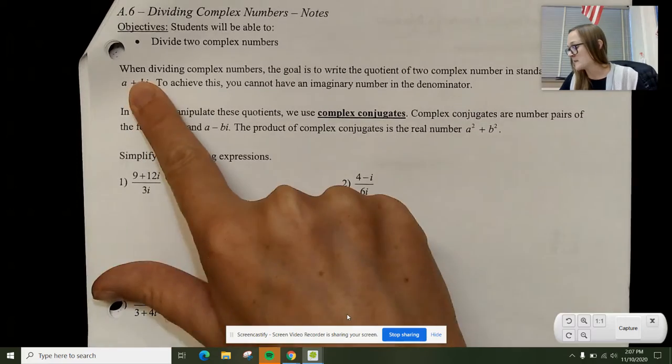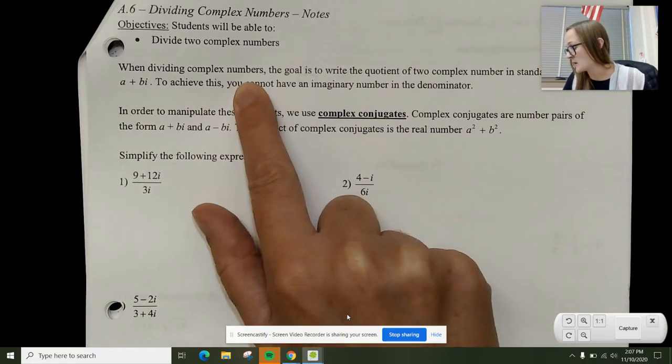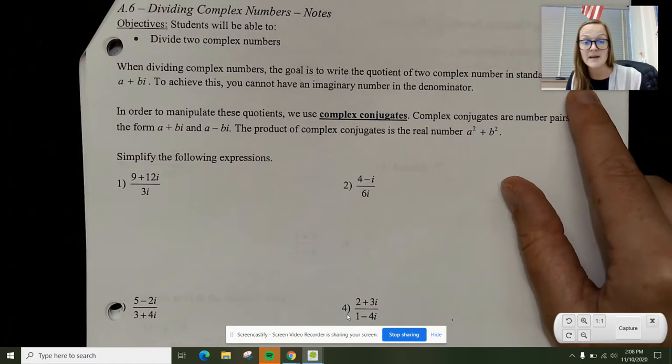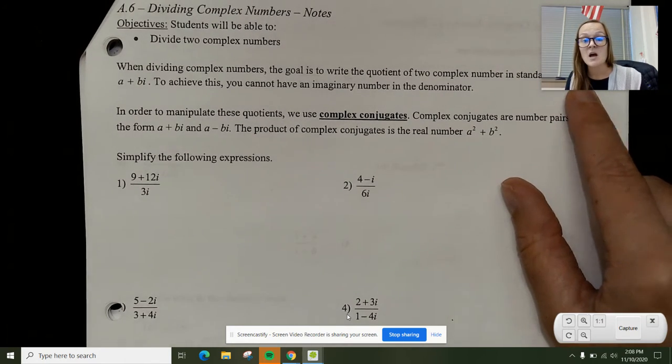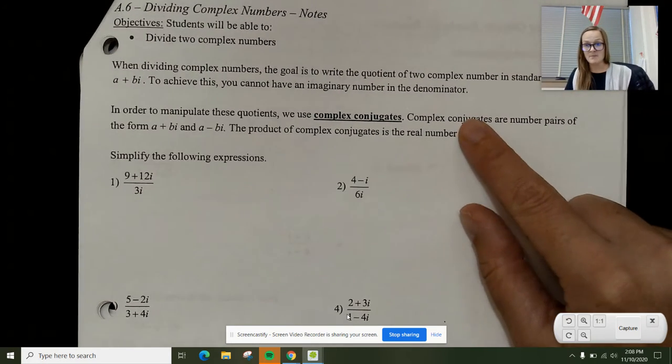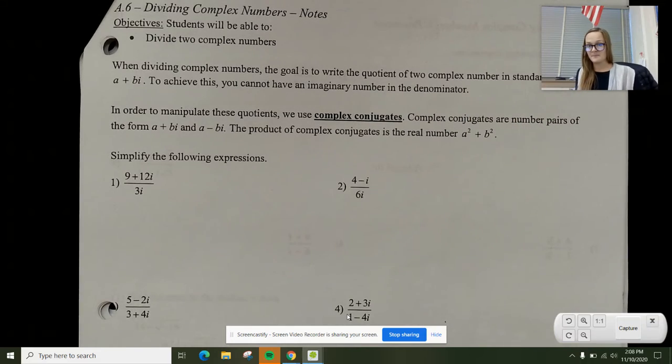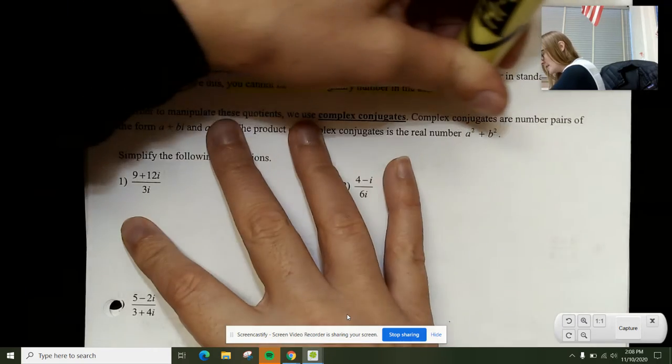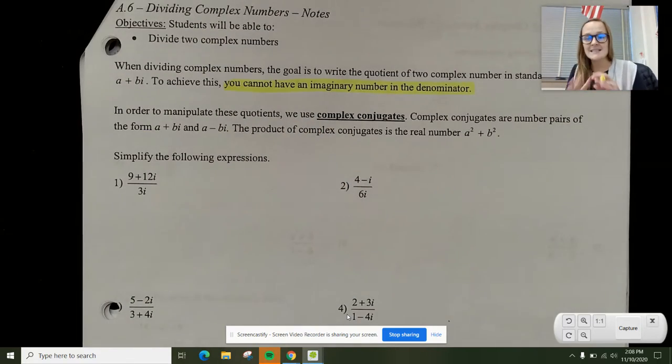Looking at the top, when dividing complex numbers, the goal is to write the quotient of two complex numbers in standard form a plus bi. You cannot have an imaginary number in the denominator. I'm going to repeat that: you cannot have an imaginary number in the denominator. This is the key.